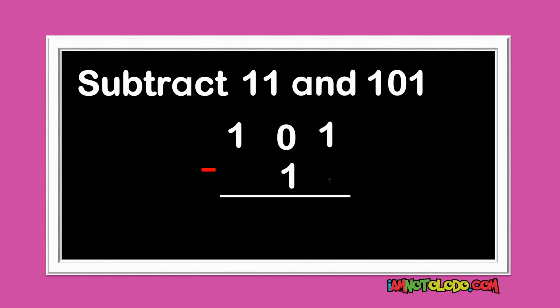1 minus 1 is 0. 0 kind of minus 1 — so what do we do? We borrow from here. When we borrow this one, this one becomes 0. Remember, this is binary. It is base 2. So what we are borrowing is 2, okay? Because this is base 2, what we are borrowing is 2.